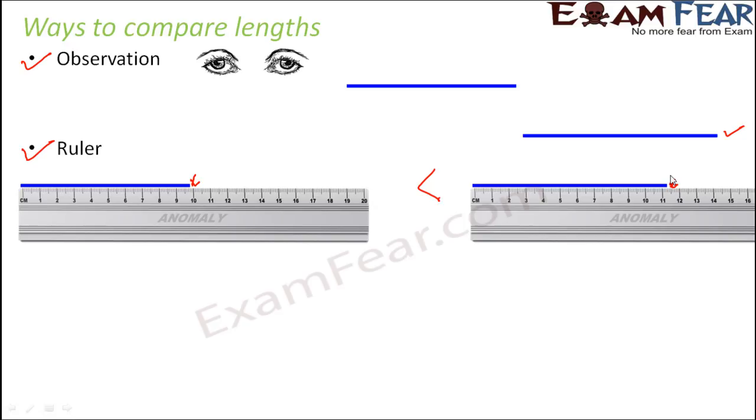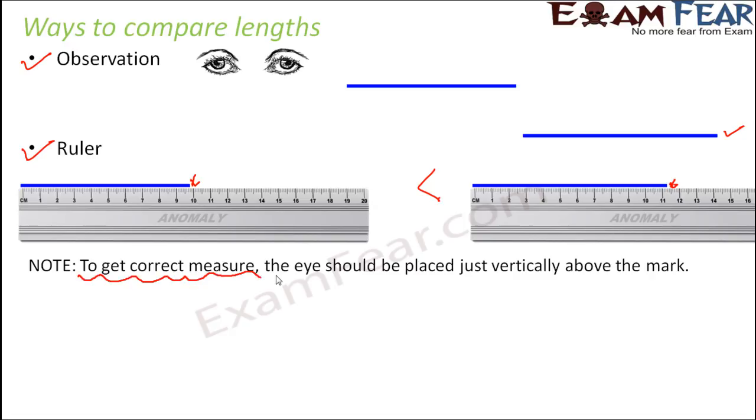What is this positioning error? Now, whenever we make measurements using a ruler, we need to ensure that our eye is placed exactly vertically above the mark for which we are doing the observation. So to get a correct measure, the eye must be placed just vertically above the mark.